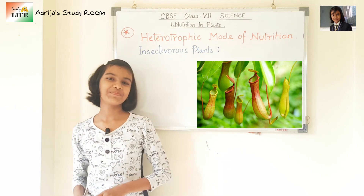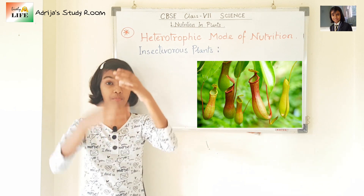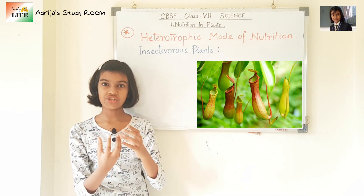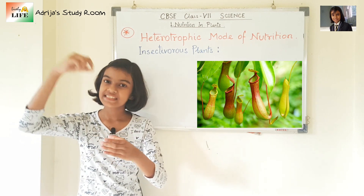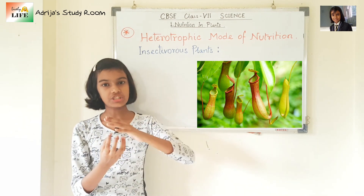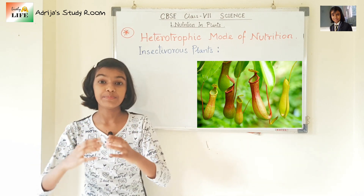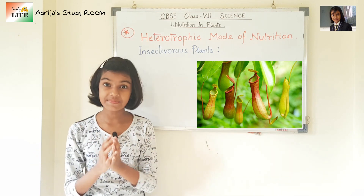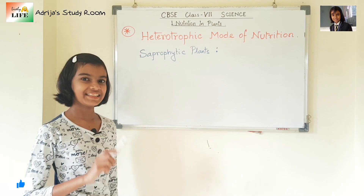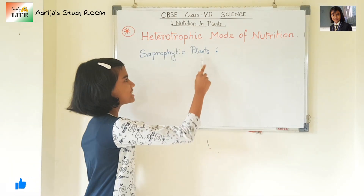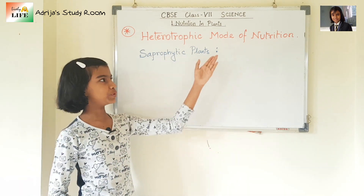Let's take the example of the pitcher plant. The leaves of the pitcher plant are modified into a pitcher-like structure, and the tip of the leaf forms a lid. When an insect sits on the pitcher plant, the lid closes and the insect is trapped inside. The pitcher plant then secretes some enzymes and the insect gets digested.